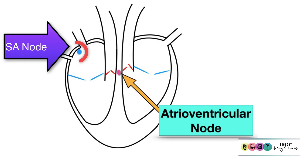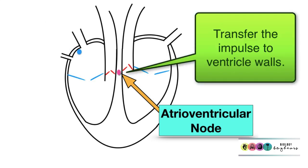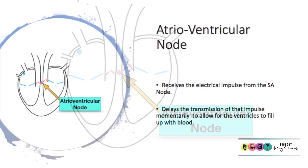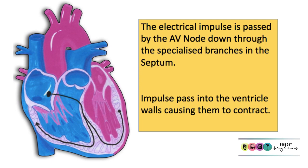When the SA node or the pacemaker generated that electrical impulse, it was also immediately sent to another bundle of very specialised cells — the AV node, or the atrioventricular node. The role of this specialised bundle of cells is to transmit the electrical impulse down to the walls of the ventricles. However, it does so after a momentary delay. So the atrial walls are now relaxed, and the electrical impulse is passed by the AV node down through specialised branches in the septum — the wall separating the left and the right side of the heart.